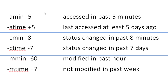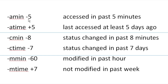Another important option is being able to find files based on when they were accessed, changed, or modified within a certain time frame. There are three key letters: a is for access, c is for change or status change, and m is for modified time. And min is for minutes, time is for days. A minus sign means within the past N minutes or days; a plus sign means more than N days ago. If you don't put a plus or minus sign, it means exactly that many minutes ago.